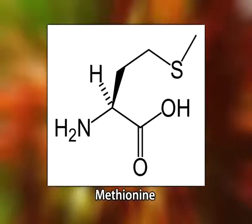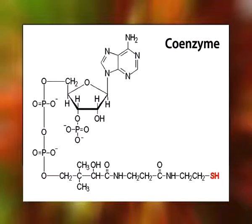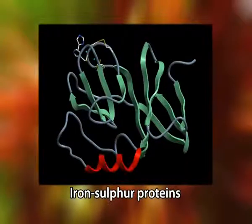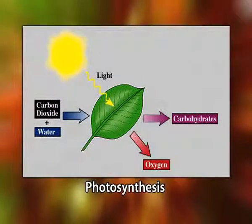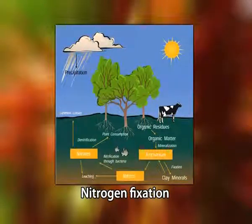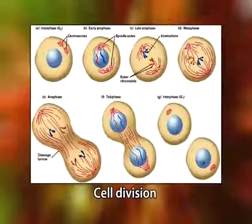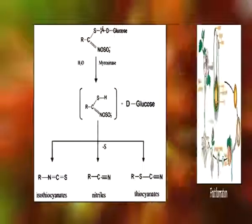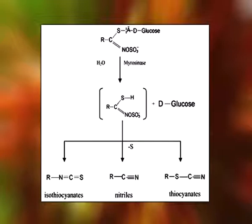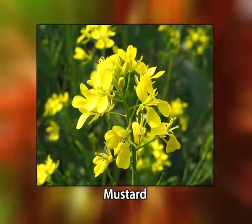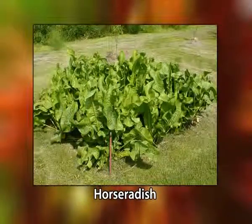Now let us discuss sulfur. Sulfur is taken up by the plant as the divalent sulfate anion. It is found in two amino acids, cysteine and methionine, and is a constituent of vitamins like biotin and thiamine, and coenzyme A — an important component in respiration and fatty acid metabolism. In the form of iron-sulfur proteins, it is important in electron transport reactions of photosynthesis and nitrogen fixation. It is also essential for chlorophyll formation, cell division, and fruit formation. Sulfur-containing thiocyanates and isothiocyanates are responsible for the pungent flavors of mustards, cabbage, turnips, horseradish, and other plants of family Brassicaceae.